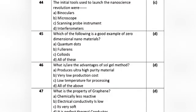Question 20: The initial tools used to launch the nanoscience revolution were — Option A: binoculars. Option B: microscope. Option C: scanning probe instruments. Option D: interferometers. The correct answer is Option C: scanning probe instruments.